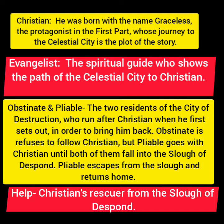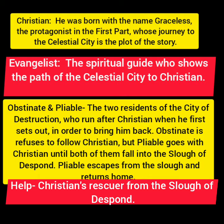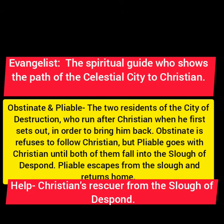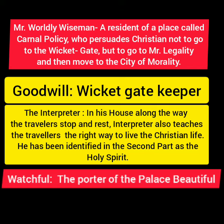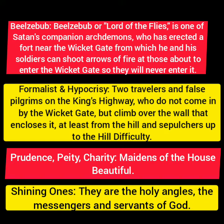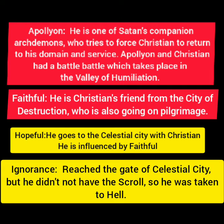First we have Christian, who is an everyman figure. Then we have Evangelist, the spiritual guide. After this we have Obstinate and Pliable, the neighbors of Christian. Then there is Help, who helps Christian come out from the Slough of Despond. We also have Mr. Worldly Wiseman and Goodwill — Goodwill is the gatekeeper. Mr. Worldly Wiseman tries to divert Christian from the path of the Wicket Gate toward a town called Morality. Other characters include Watchful, Faithful, Formalist, Hypocrisy, Timorous, Mistress, and damsels named Discretion, Prudence, Pity, and Charity. Additional characters are Hopeful and Ignorance.